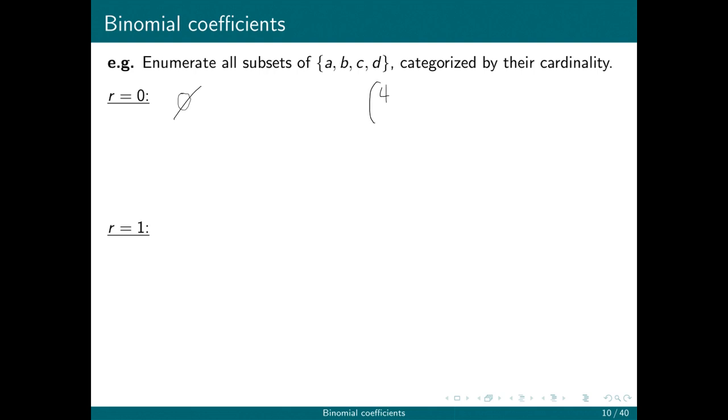Well, let's see what 4 choose 0 is equal to. It better be 1, right? Okay, so the formula for 4 choose 0 is 4 factorial divided by 0 factorial, that's r, times 4 factorial, that's n minus r factorial. And we can cancel the 4 factorials. And 0 factorial is 1, so this is just 1.